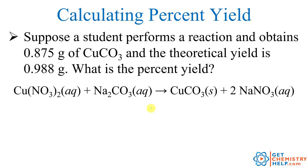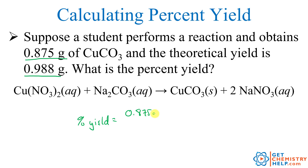Let's do a couple of examples. Suppose a student goes into a lab and performs a reaction, and they obtain 0.875 grams of their product, copper-2-carbonate. But when they calculated how much they should have made, the theoretical yield was 0.988 grams. The percent yield is 0.875 divided by 0.988 times 100, which gives us 88.6%. So this would be the percent yield for this reaction.